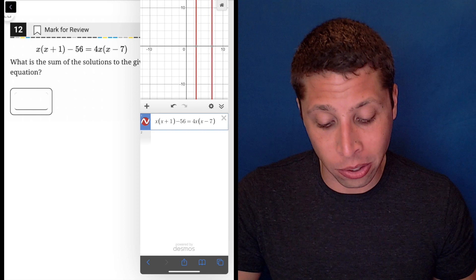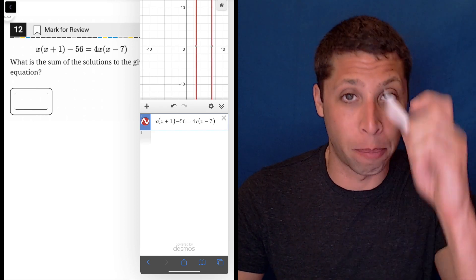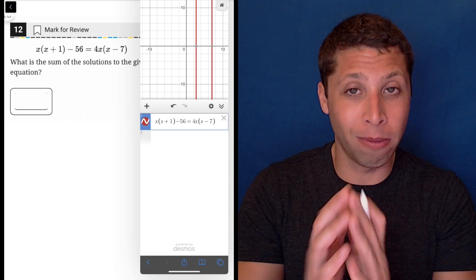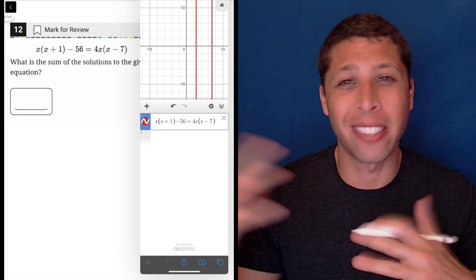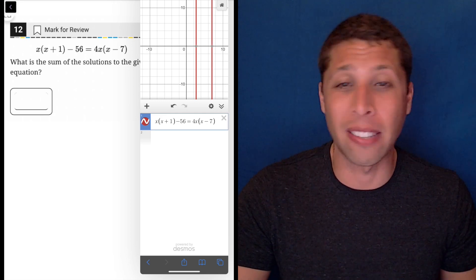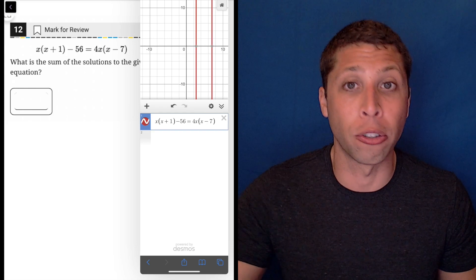If it was like y equals x times x plus 1 minus 56, then that would be a parabola. And we could kind of split this if we wanted to put a y equals in front of each half of the equation and then see the parabolas interacting. But I think that that's even more confusing. Basically, we just need to understand what's happening here, what our calculator is doing for us.